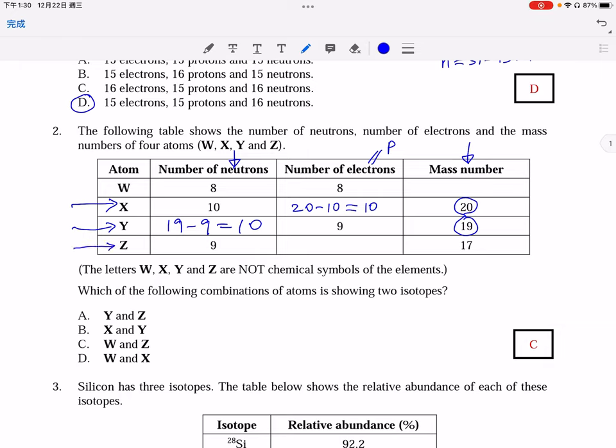And similarly, for atom Z, as the mass number is 17 and the number of neutrons is 9, so the number of electrons can be achieved by this subtraction, 8.